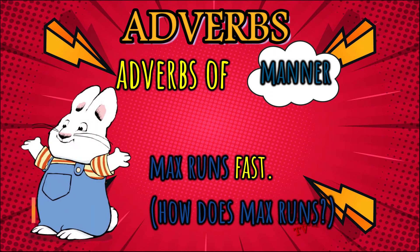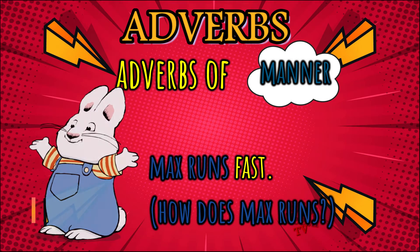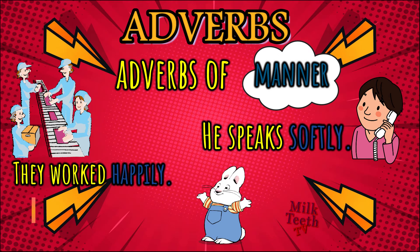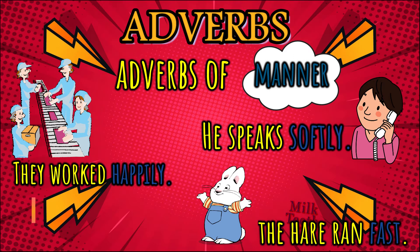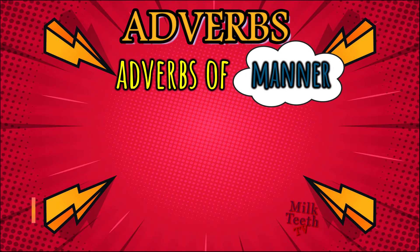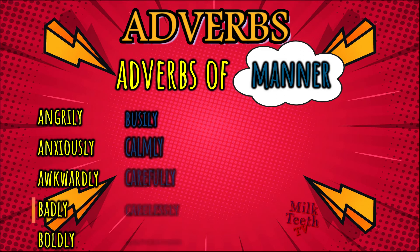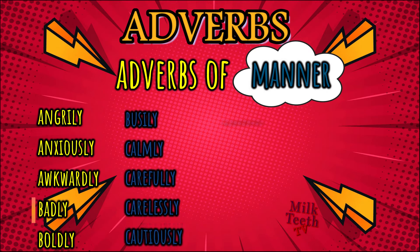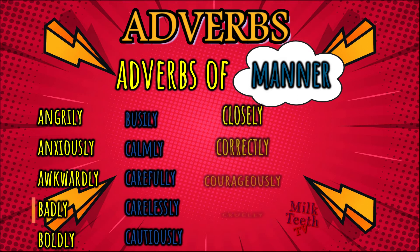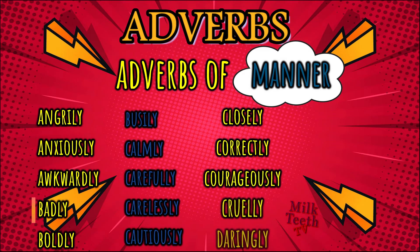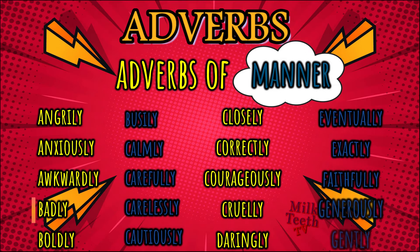Max runs fast — how does Max run? Fast. So 'fast' is an adverb of manner. Adverbs of manner tell us how an action is performed. Let's read the list of adverbs of manner: angrily, anxiously, awkwardly, badly, boldly, busily, calmly, carefully, carelessly, cautiously, closely, cruelly, daringly, eventually, exactly, faithfully, generously, gently.